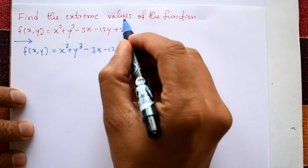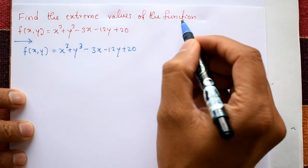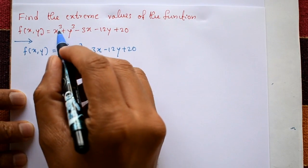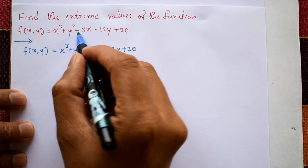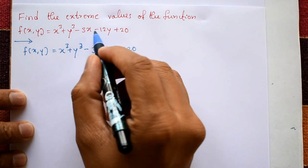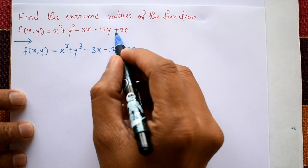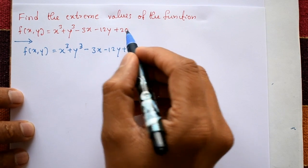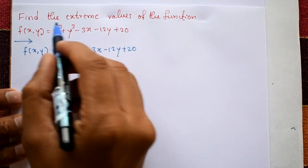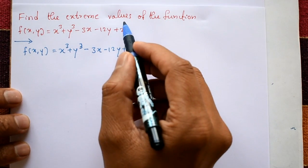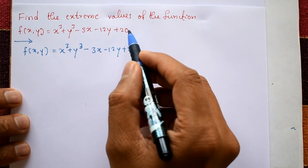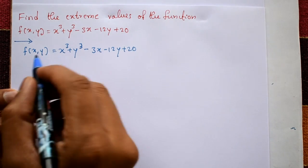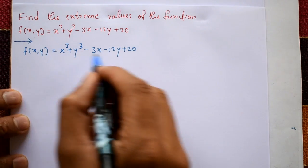Find the extreme values of the function f(x,y) = x³ + y³ - 3x - 12y + 20. Finding extreme values means finding the maximum value and minimum value.